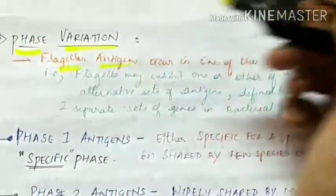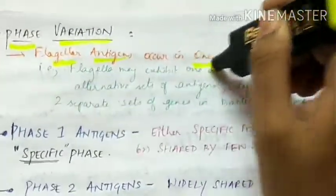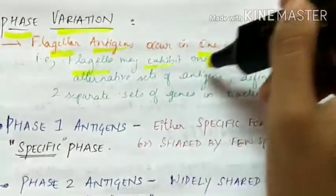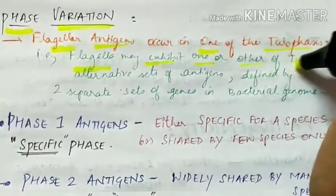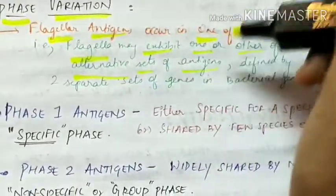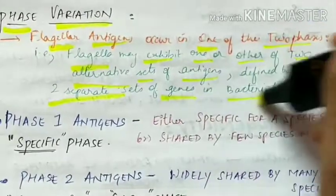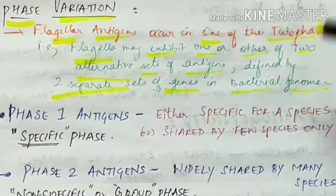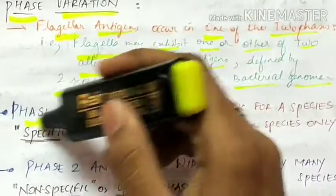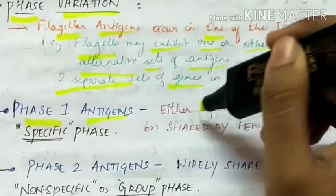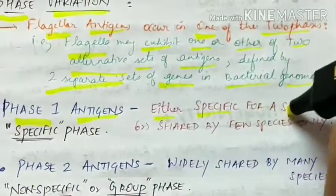Phase variation: The flagellar antigens occur in one of the two phases, that is the flagella may exhibit one or the other of two alternative sets of antigens defined by two separate sets of genes in the bacterial genome. The two phases are first phase one antigens, which are either specific for a species or shared by only few species. So this phase one is called as specific phase.